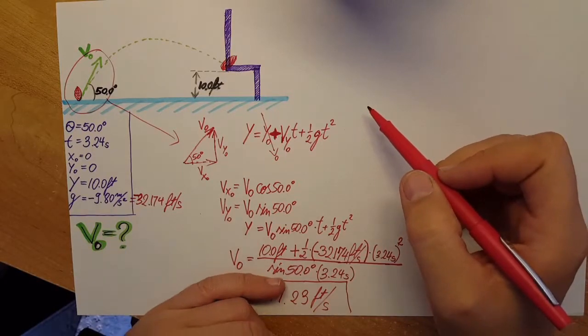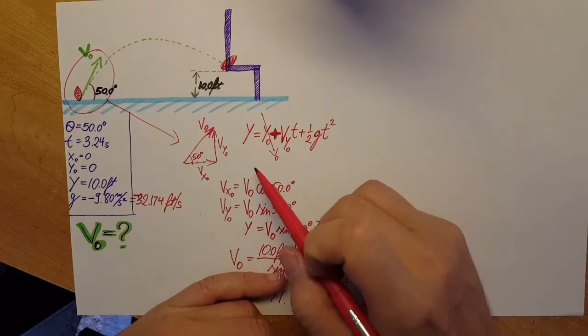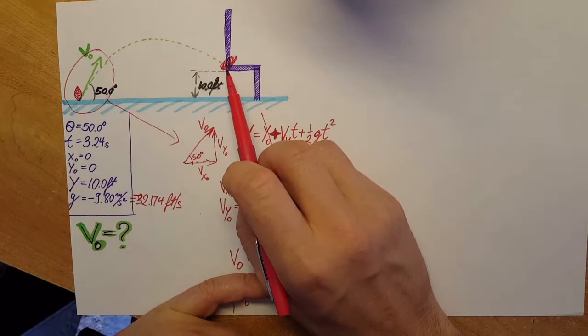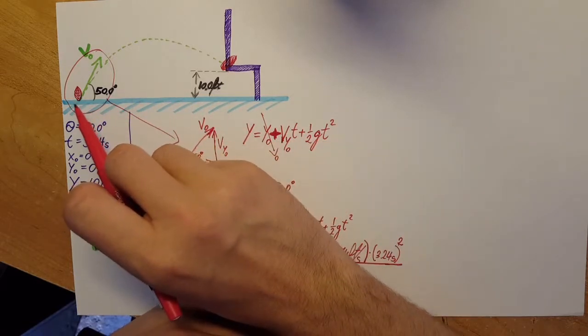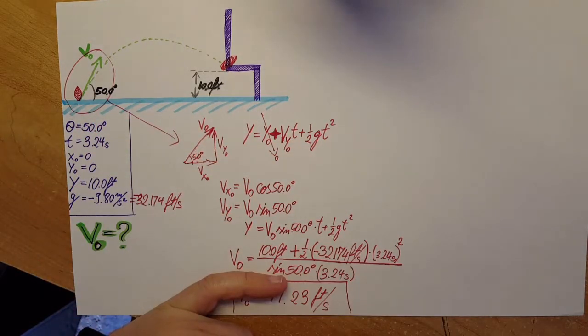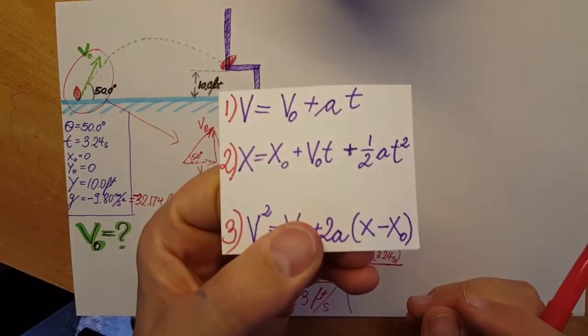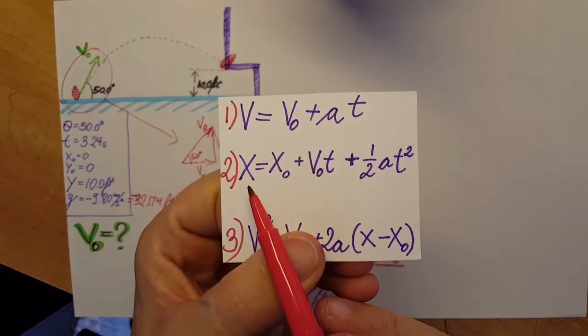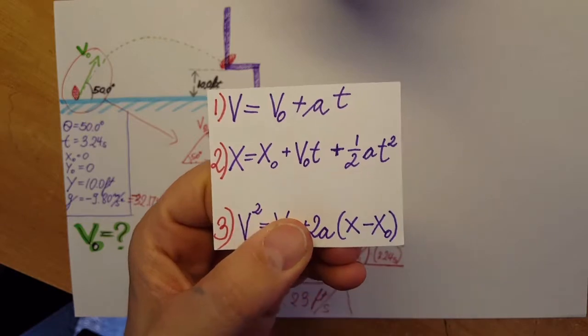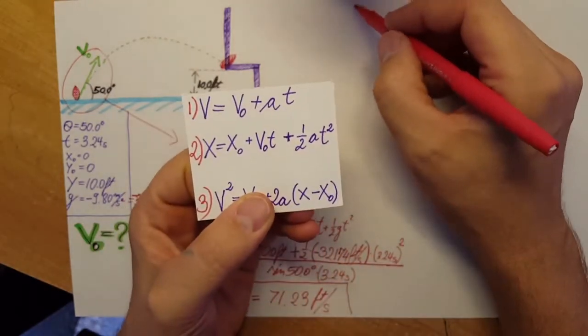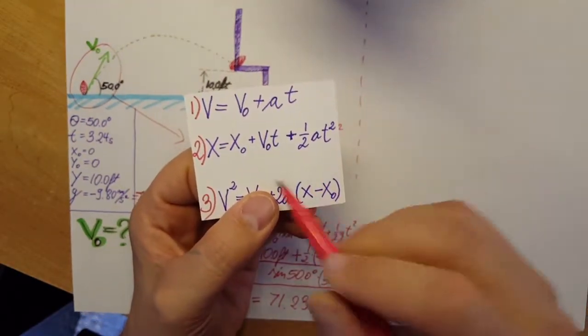For the second part they're asking us to calculate the horizontal distance between the goal post and the point where the ball was kicked from so we're gonna use our kinematic equations again. We're gonna rely on the second one and we're gonna use it just like that as it is over here in the x dimension.